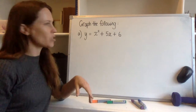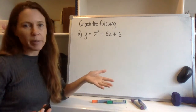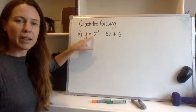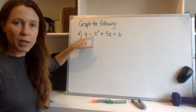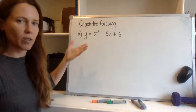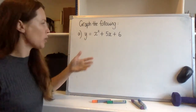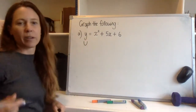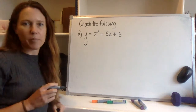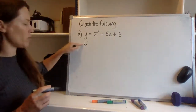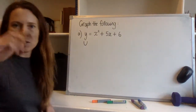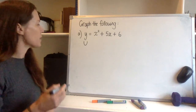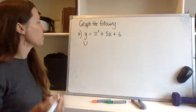We start with the question: which way up is it? The number out the front of the x squared is a one, and that's greater than zero — it's a positive number. So that tells me that we're looking at an upright parabola. I'm going to jot that down so in my mind I can see what this thing looks like. It's not upside down, it's the right way up.